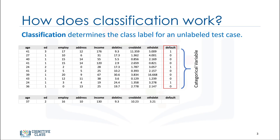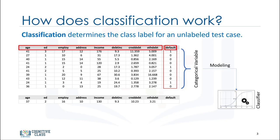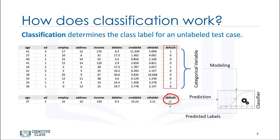The goal of a loan default predictor is to use existing loan default data, which is information about the customers such as age, income, education, etc., to build a classifier, pass a new customer or potential future defaulter to the model, and then label it—the data point—as defaulter or not defaulter, for example, 0 or 1.